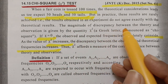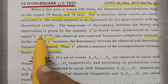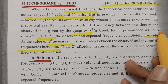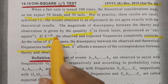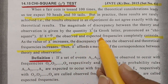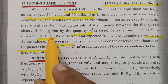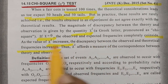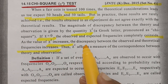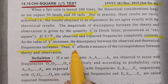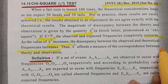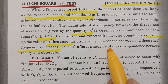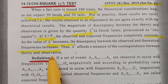The magnitude of the discrepancy between the theory and the observations is given by the quantity chi-square — a Greek letter pronounced as chi. If chi-square is 0, the observed and the expected frequencies completely coincide. As chi-square increases, the discrepancy between the observed and the theoretical frequency increases. Thus, chi-square offers a measure of the correspondence between the theory and the observations.